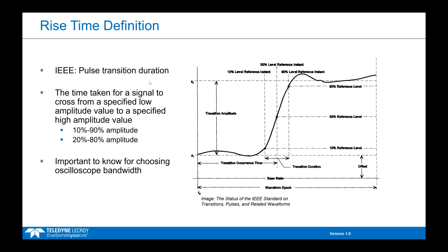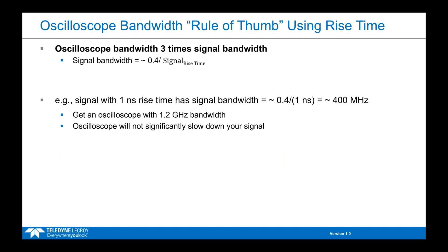The IEEE refers to rise time as the pulse transition duration — essentially the time taken for your signal to cross from a specified low amplitude value to a specified high amplitude value, typically seen as 10 to 90% of the signal's amplitude. When it comes to oscilloscopes, knowing your rise time is important for choosing how much oscilloscope bandwidth you need to capture your signal's rising edges. One rule of thumb for selecting oscilloscope bandwidth states that you should get an oscilloscope with bandwidth that is three times your signal's bandwidth, where signal bandwidth is roughly 0.4 divided by signal rise time.